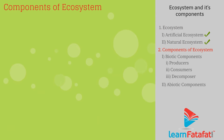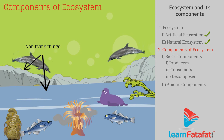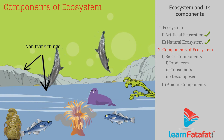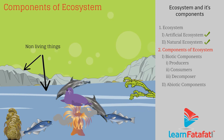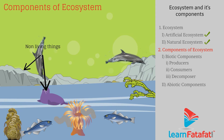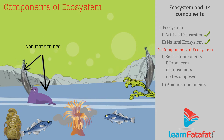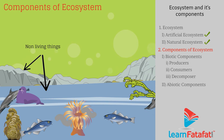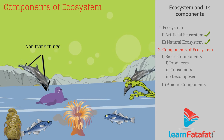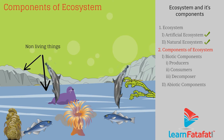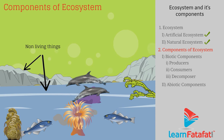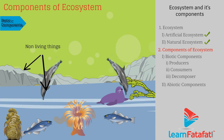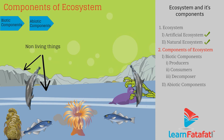Components of ecosystem. All the living and non-living things present in an ecosystem are the components of that ecosystem. Components of ecosystem are classified as biotic components and abiotic components.